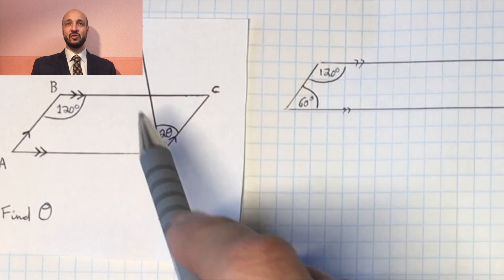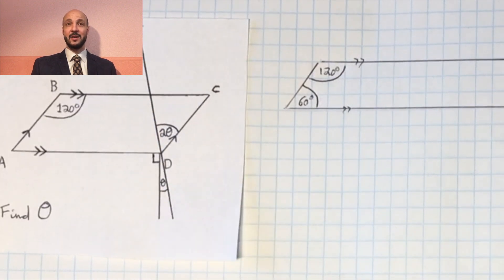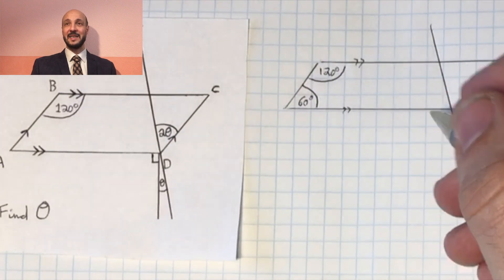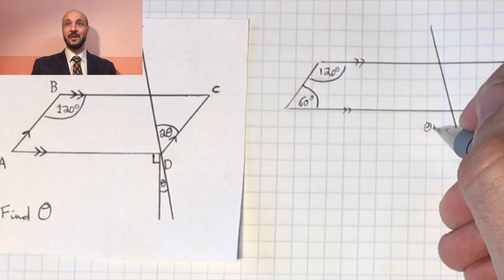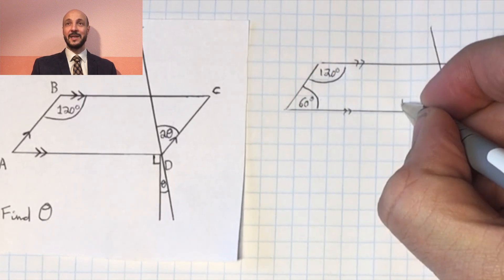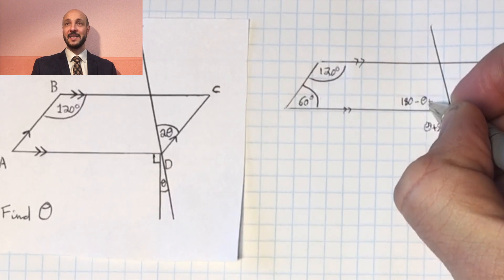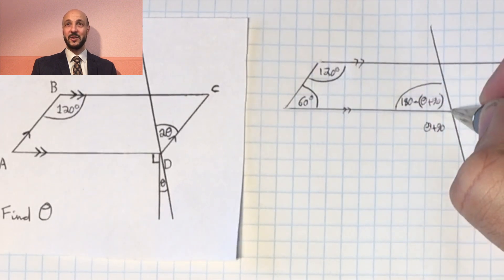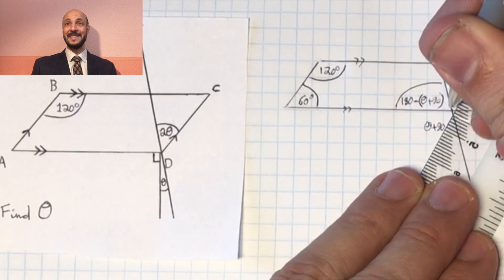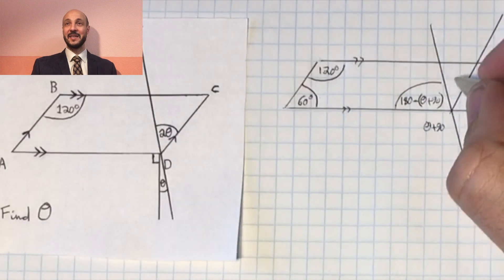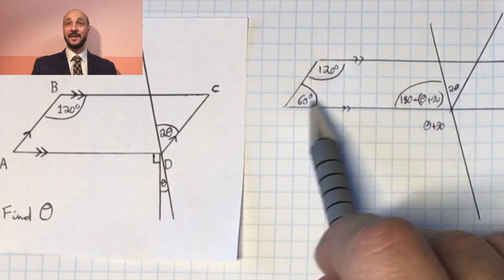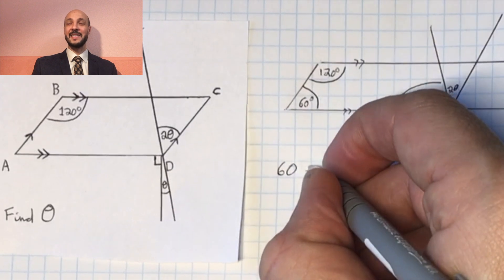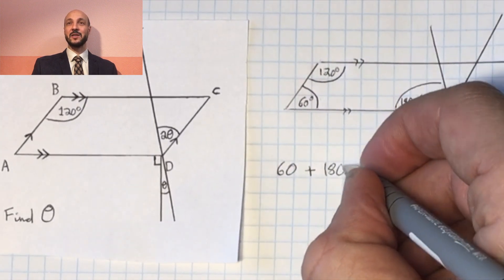The unknown angle is on a straight line with 90 degrees and θ. Since a straight angle sums to 180 degrees, that part of the straight angle equals 180 minus (θ + 90). Together with the 2θ already shown, we know the full angle ADC. Using interior angles on ADC with angle DAB gives us the equation: 60 plus 180 minus (θ + 90) equals 180 degrees. Now we just need to solve this equation for θ.